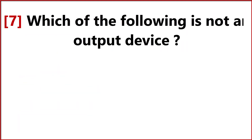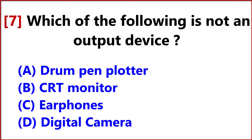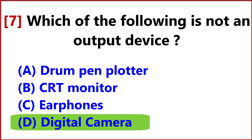Which of the following is not an output device? Answer, Option D, Digital Camera.